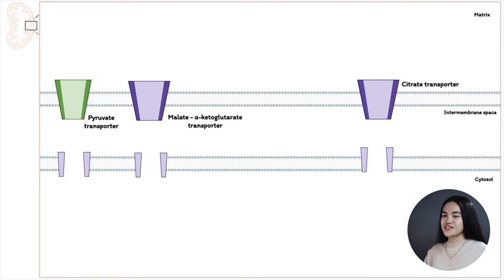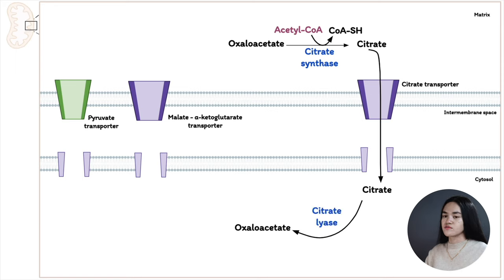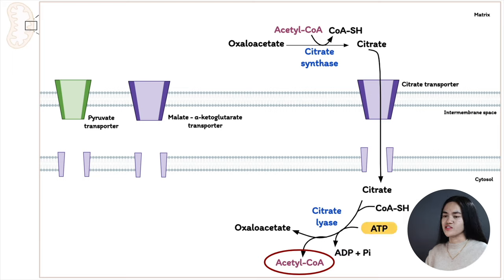In the citrate shuttle: acetyl-CoA reacts with oxaloacetate to produce citrate, catalyzed by citrate synthase. Citrate passes through the citrate transporter in the inner membrane into the cytosol. There, citrate lyase converts citrate back to oxaloacetate and acetyl-CoA — this reaction requires ATP and CoA. Now acetyl-CoA is available in the cytosol for fatty acid synthesis.